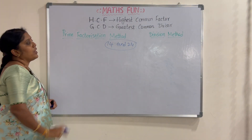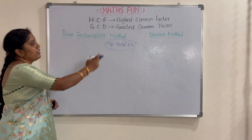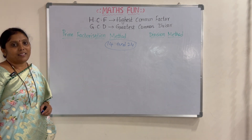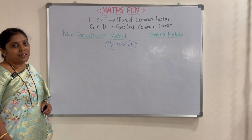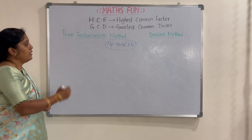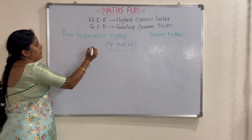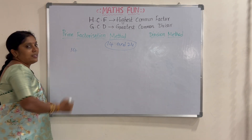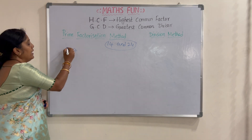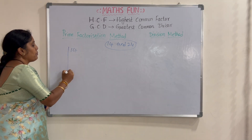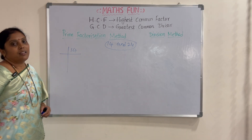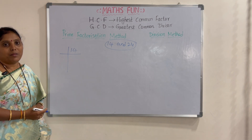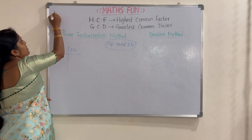First we are going to find out the HCF of 14 and 24 using the prime factorization method. Take the number 14. Let us write the prime factorization using only prime numbers. You know what prime numbers are?